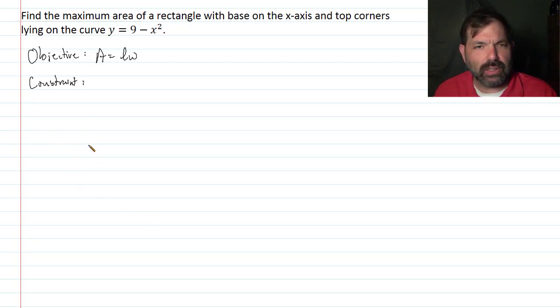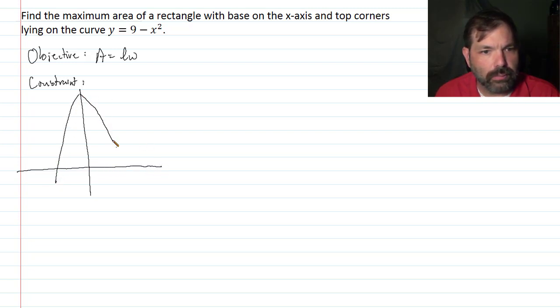9 minus x square, that's a parabola opening down. And so it looks roughly like that. All right, parabola opening down. And just with a little bit of algebra here, we know that this point is 3, 0. This point is negative 3, 0. And this point is 9, 0.